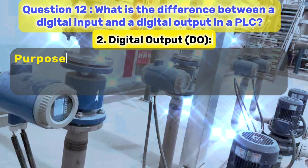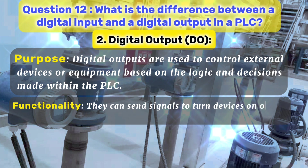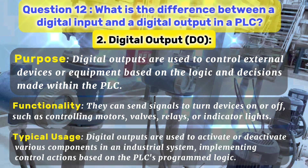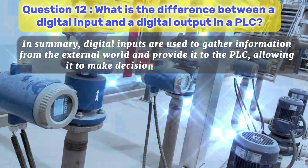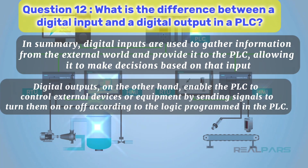2. Digital output (DO). Purpose: digital outputs are used to control external devices or equipment based on the logic and decisions made within the PLC. Functionality: they can send signals to turn devices on or off, such as controlling motors, valves, relays, or indicator lights. Typical usage: digital outputs are used to activate or deactivate various components in an industrial system, implementing control actions based on the PLC's programmed logic.